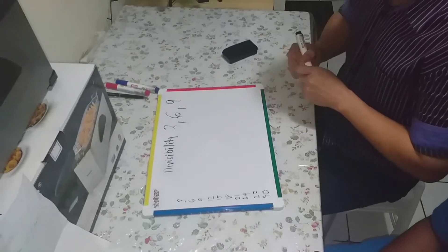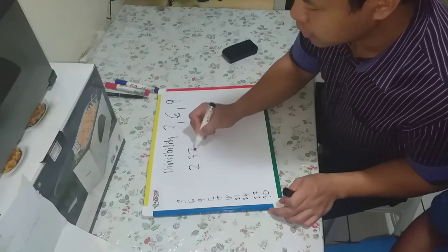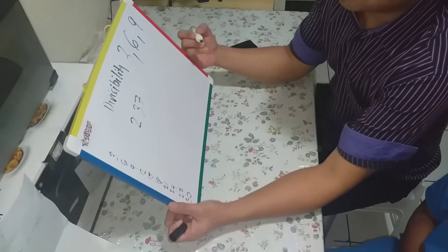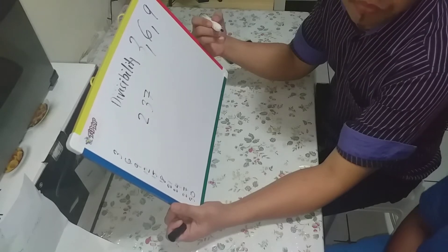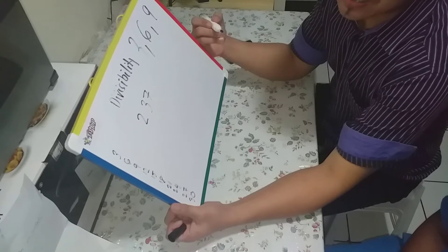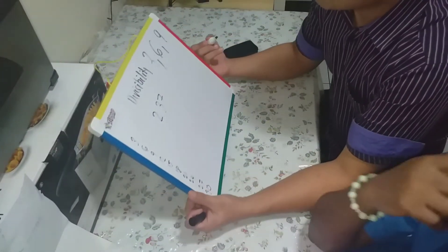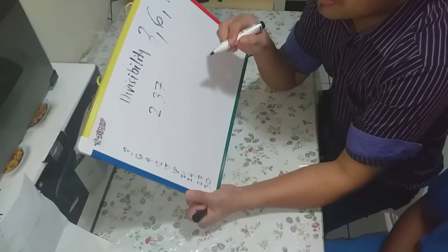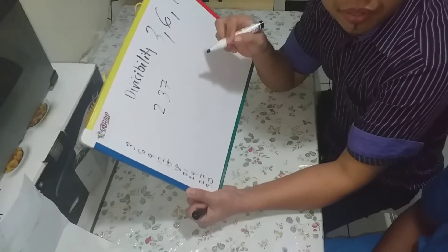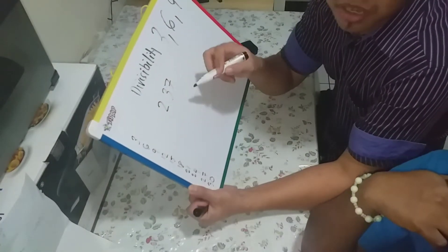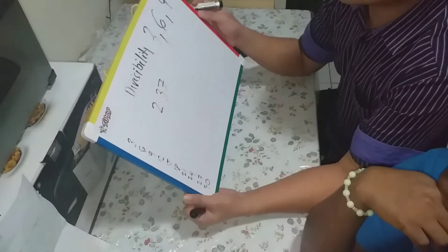I will give you an example: 237. Is it divisible by 3? A number is divisible by 3 if the sum of the digits is divisible by 3. So for 237, you need to add 2, 3, and 7. If the sum is divisible by 3, then the number is divisible by 3.